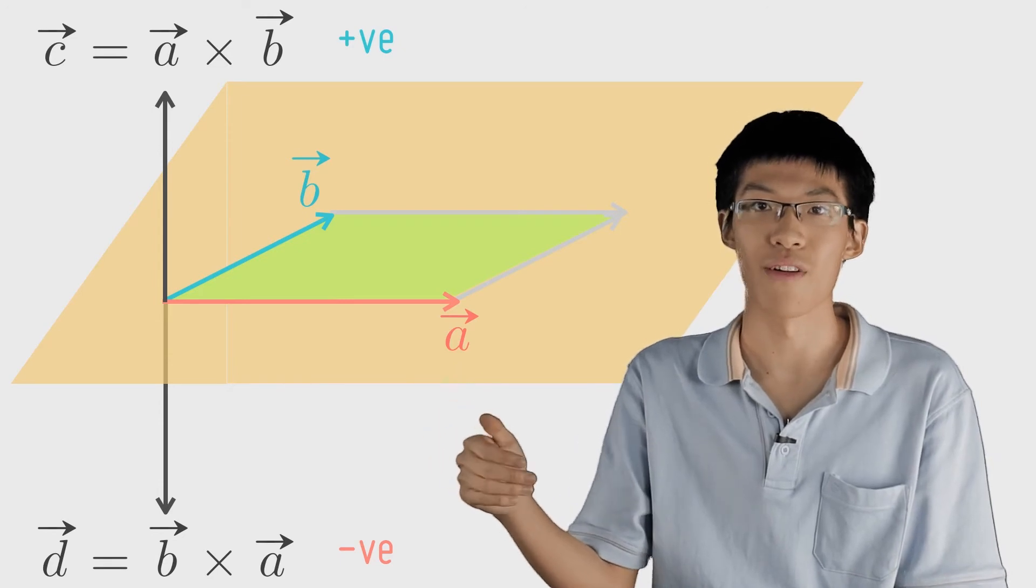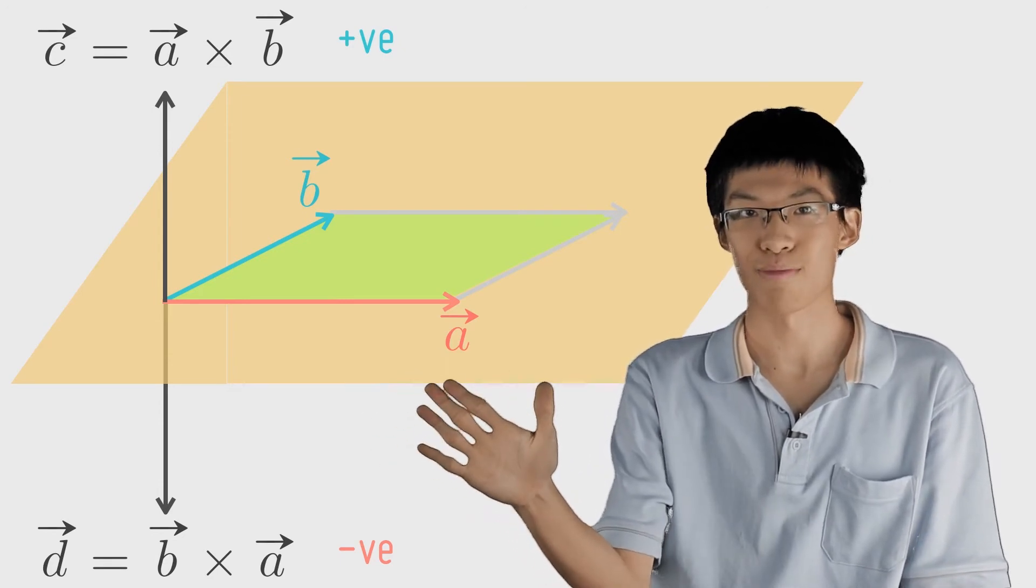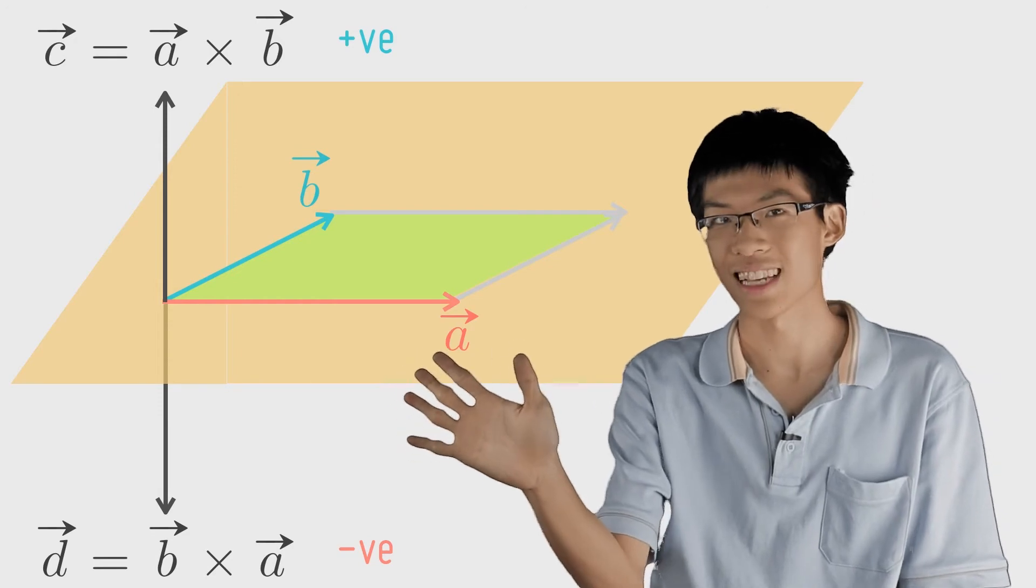If we instead try to wrap from b to a, we realize that our thumb must point downwards because my fingers can't wrap backwards.